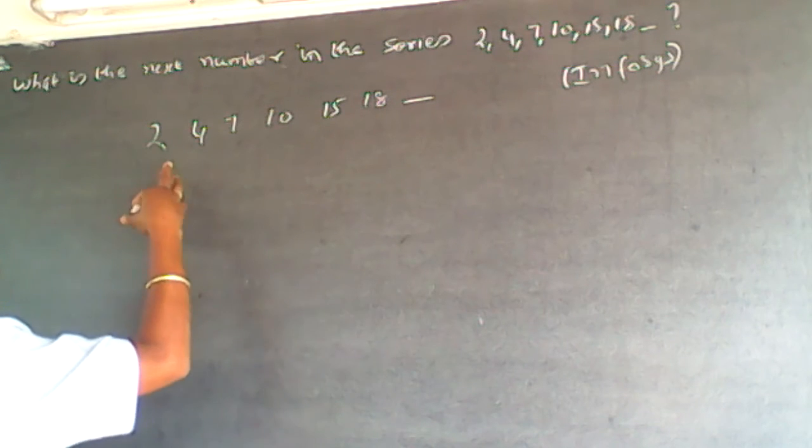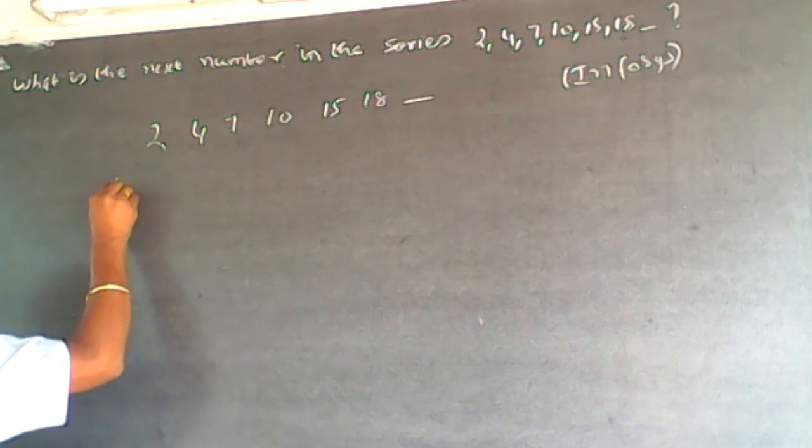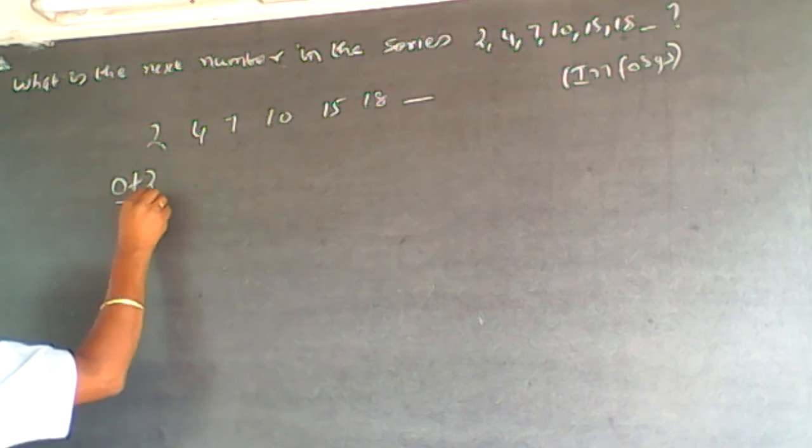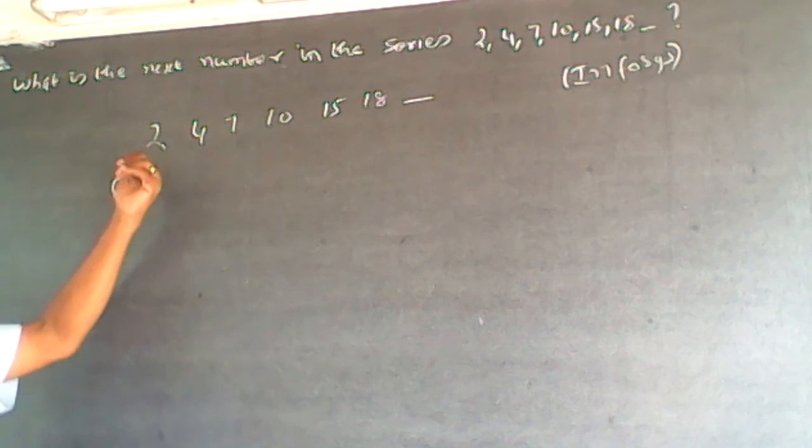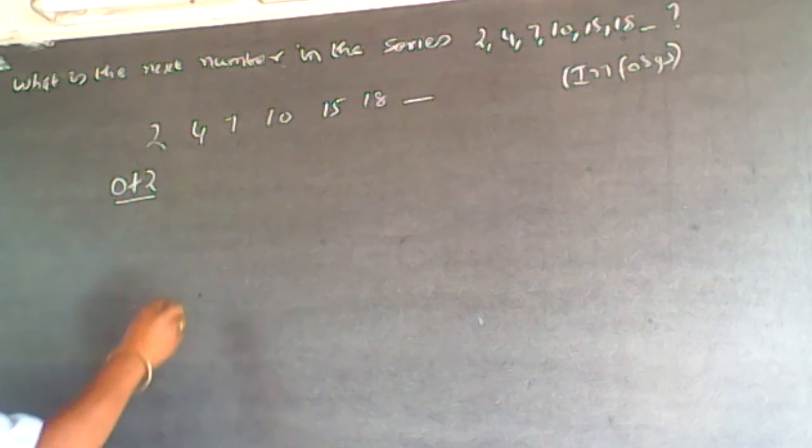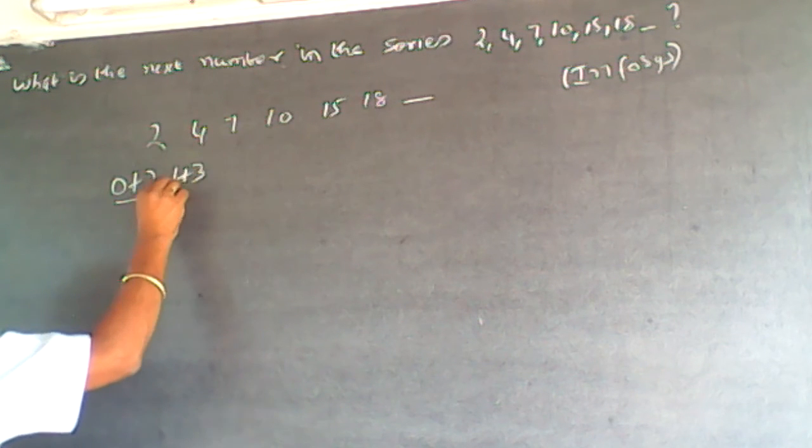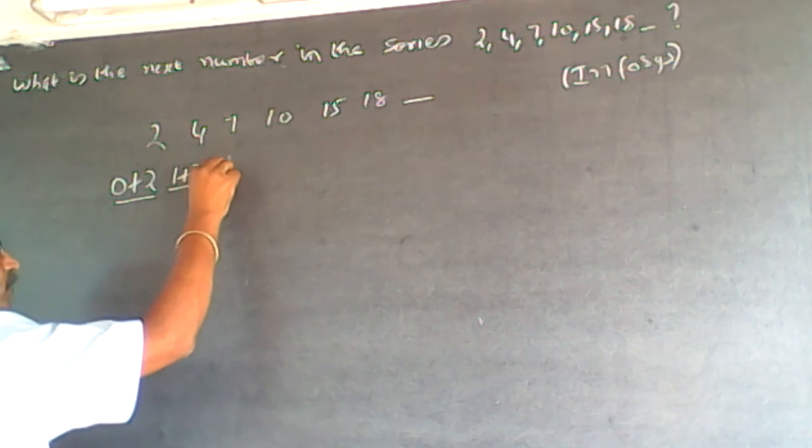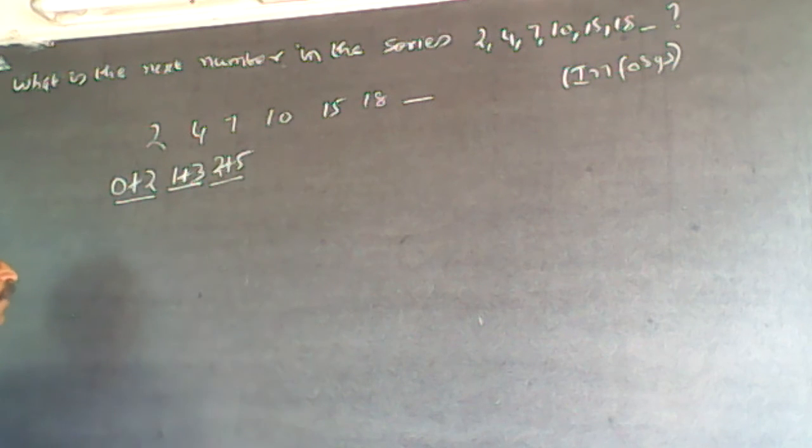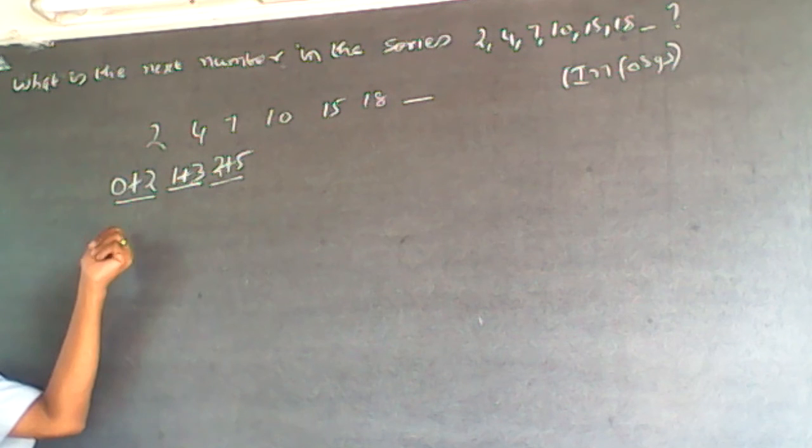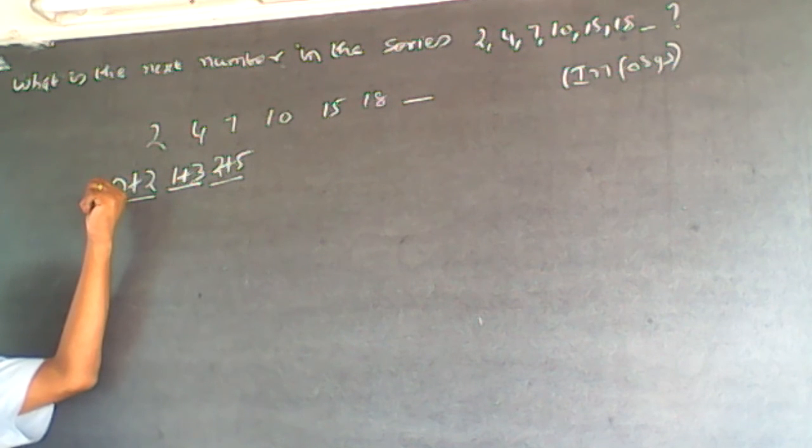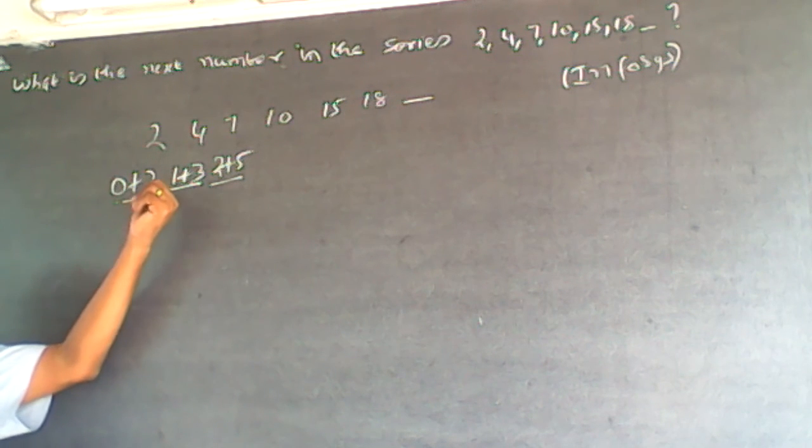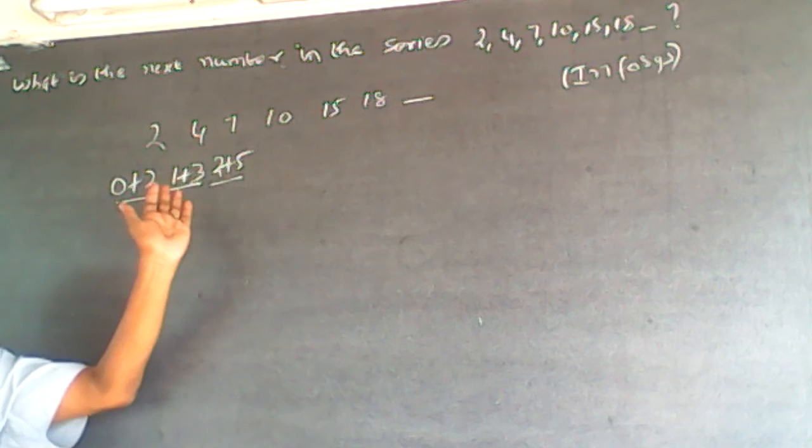So what I'm going to do is, I will take 0 plus 2. 0 plus 2 is 2. Then here, I take it as 1 plus 3. 1 plus 3 is 4. Then the next number is 2 plus 5. Now you can wonder what I am doing here. So what happens is, 0 is the starting number, then 1, then 2, I will go like this.